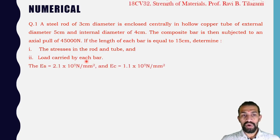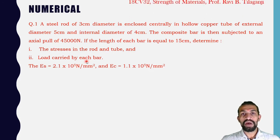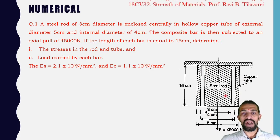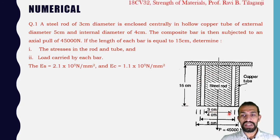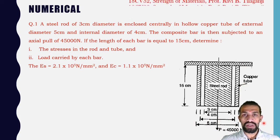Young's modulus values are given: ES = 2.1 × 10⁵ N/mm² and EC = 1.1 × 10⁵ N/mm². The figure shows length = 15 cm, steel diameter = 3 cm, copper internal diameter = 4 cm, copper external diameter = 5 cm, and load P = 45,000 Newton.